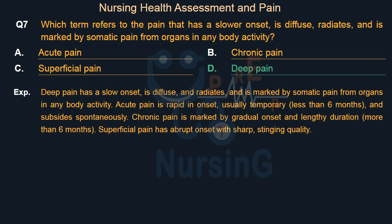Deep pain has a slow onset, is diffuse, and radiates, and is marked by somatic pain from organs in any body cavity. Acute pain is rapid in onset, usually temporary (less than six months), and subsides spontaneously. Chronic pain is marked by gradual onset and lengthy duration of more than six months. Superficial pain has abrupt onset with sharp, stinging quality.